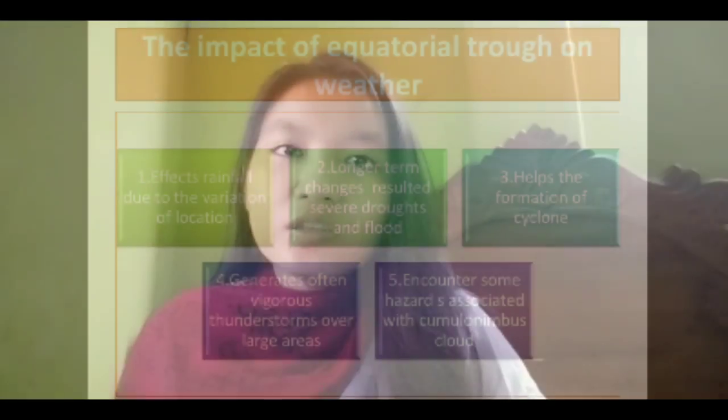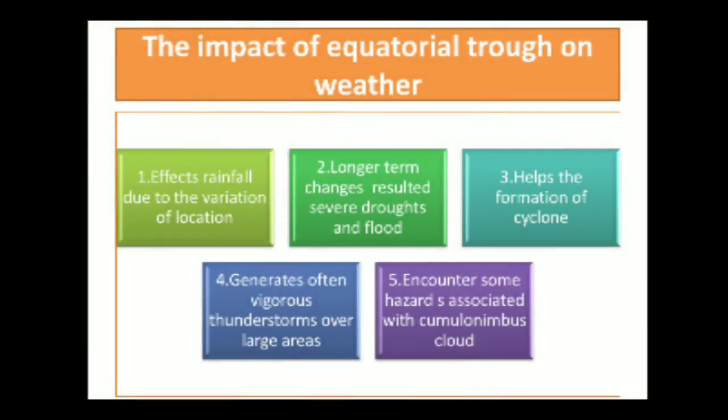The impact of the equatorial trough on weather: first, the impact varies due to variation of location; second, longer-term changes result in severe droughts and floods; third, it helps the formation of cyclones because it is a zone of wind convergence; fourth, areas of equatorial trough are characterized by convective activity which generates vigorous thunderstorms over large areas; and lastly, it brings hazards associated with cumulonimbus clouds such as icing, turbulence, and wind shear. That's all about the equatorial trough. We thank you for watching.